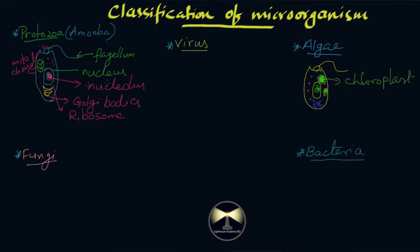The only difference between algae and protozoa is that protozoa have no chloroplasts, while algae do have chloroplasts. As a result, algae appear greenish. There is no other structural difference between algae and protozoa.